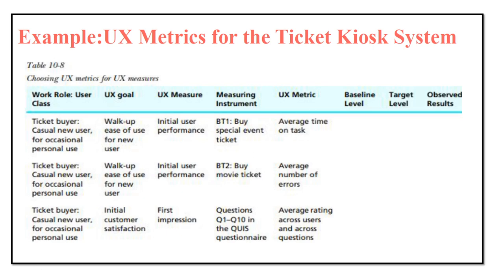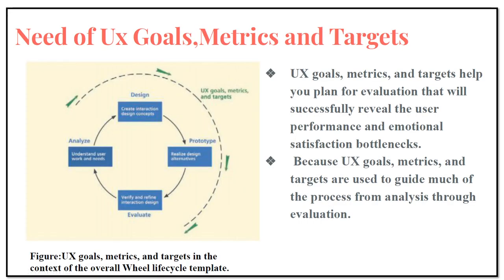Benchmark task 2 is to buy a movie ticket. Here, we measure how many errors the user makes while buying the ticket. For questionnaires, we look at the average rating received to perform the particular task. UX goals, metrics and targets are not based on just one phase of the UX life cycle — they span from the analysis phase to the evaluation phase. That means UX goals and metrics should be set from analysis to evaluation phase.